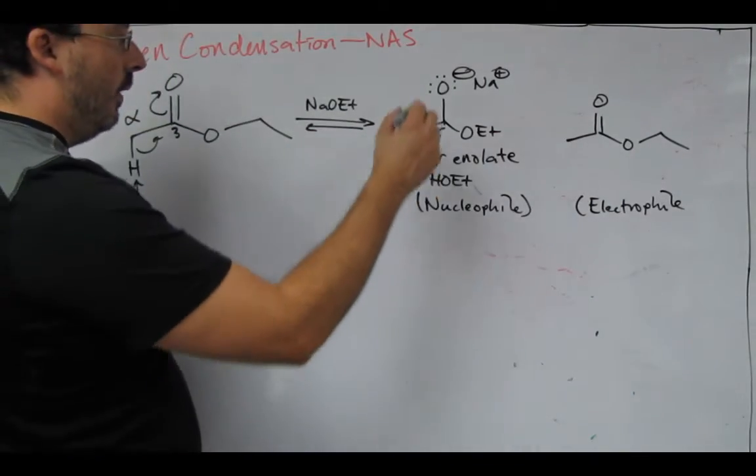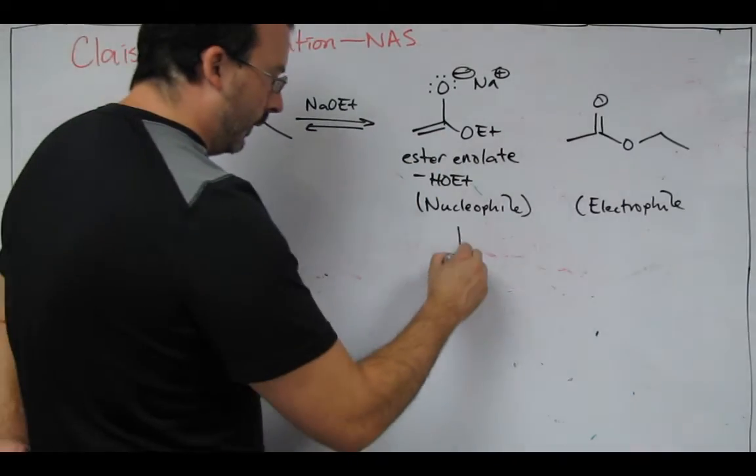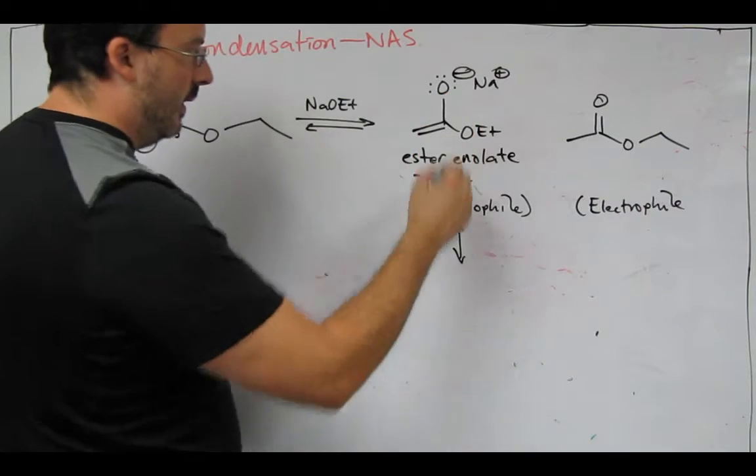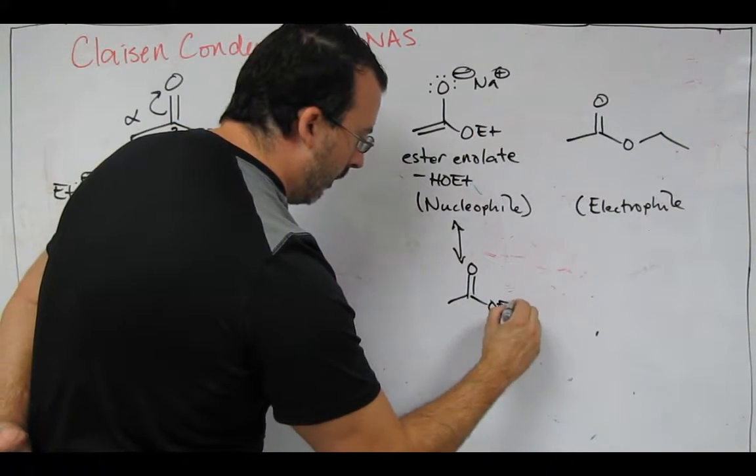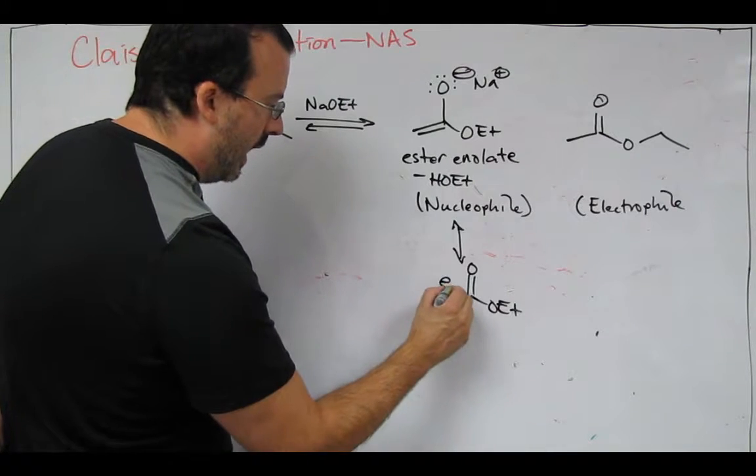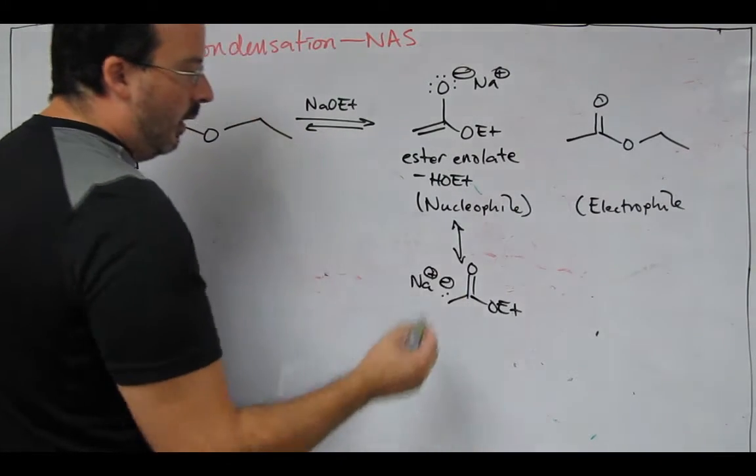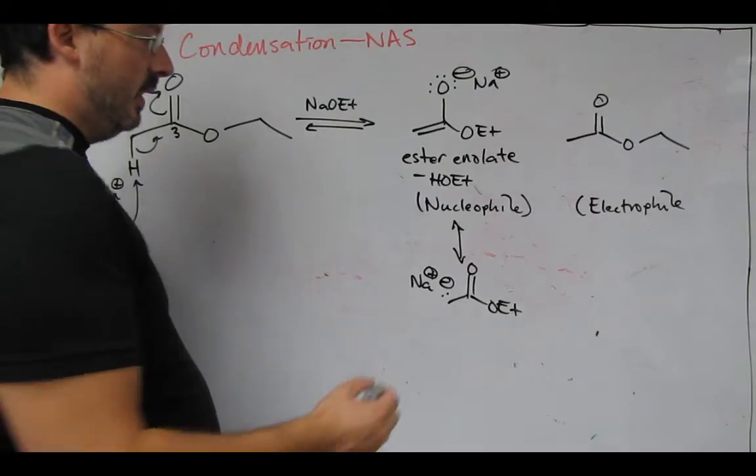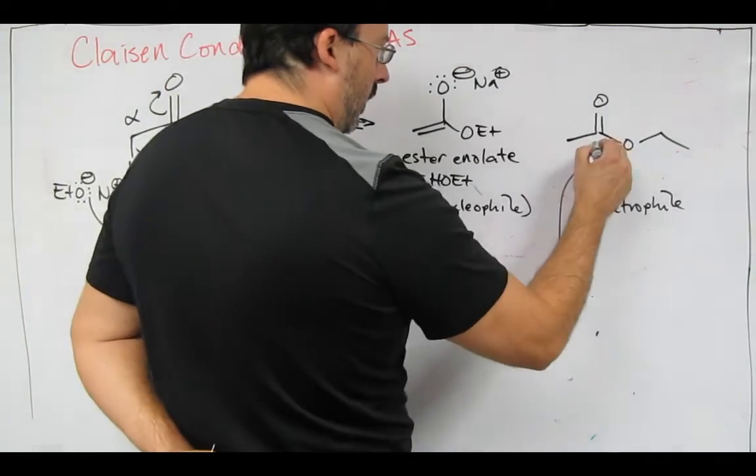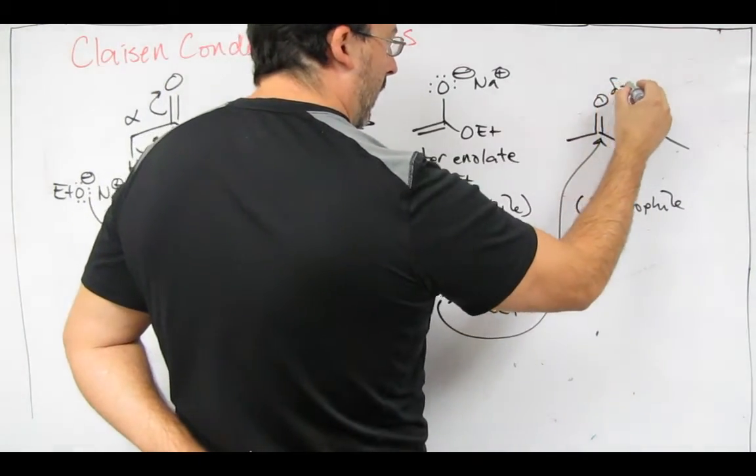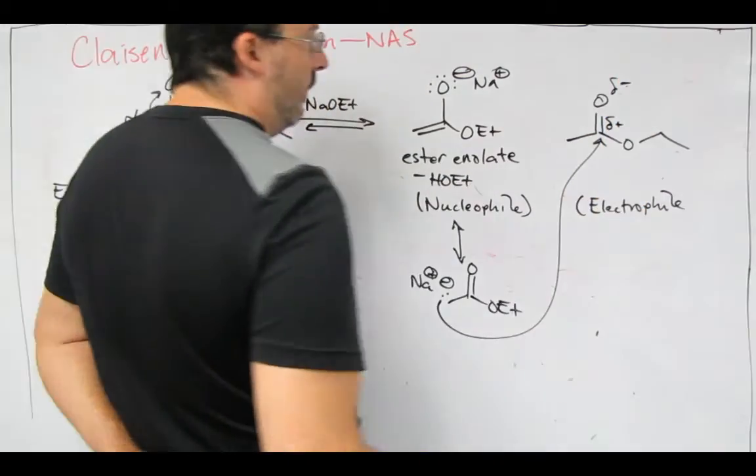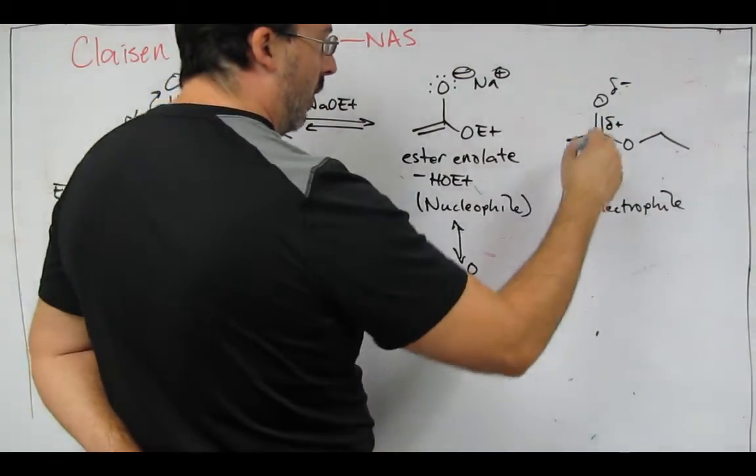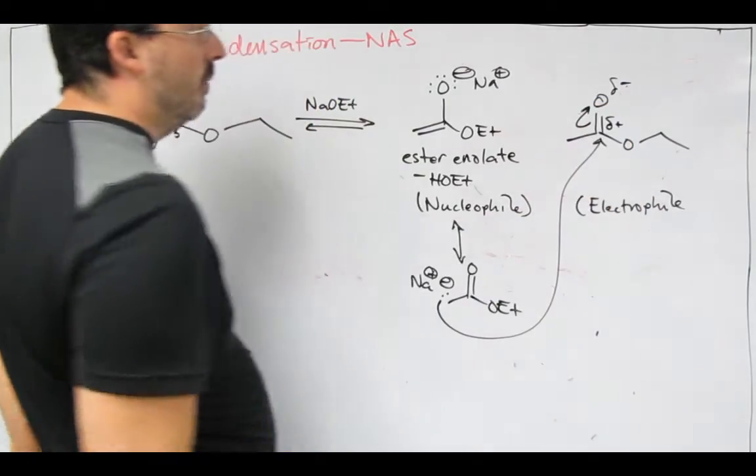Through resonance, here's the resonance hybrid of the enolate in which the carbon now is bearing the negative charge. The nucleophile drives the arrow. We're attacking the delta-positive carbon of the carbonyl. We form a carbon-carbon bond. We have to break a bond.